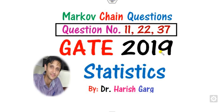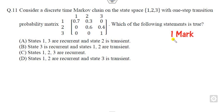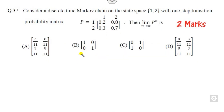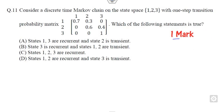Hello everyone, welcome to this 2019 statistics paper. Today we will discuss questions number 11, 22 and 37 related to Markov chains. Question 11 is 1 mark and you have to classify the states. Question 22, you have to find the probability of the chain. Question 37, you have to find the stationary probability. You can get 4 marks in total — 2 plus 1 plus 1 — in a very simple manner.